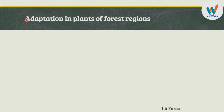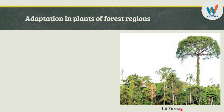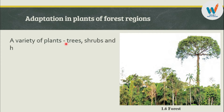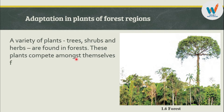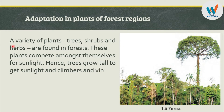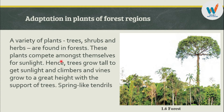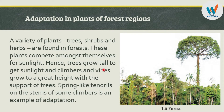Now our next point is adaptation in plants of forest region. Forest region manje, jungle pradeshatil vanaspatinchi hi madira anukulanta aapan pahaychi aahe. A variety of plants, trees, shrubs and herbs are found in forests. These plants compete among themselves for sunlight. Jangla madhe aapan trees, shrubs, herbs — zaade, zhorpe — shapla jangla madhe bagayala milatat. These plants compete among themselves for sunlight — hi zaade ekmekaat aanchi spardha saalu aaste suryaprakash milavunya saati.